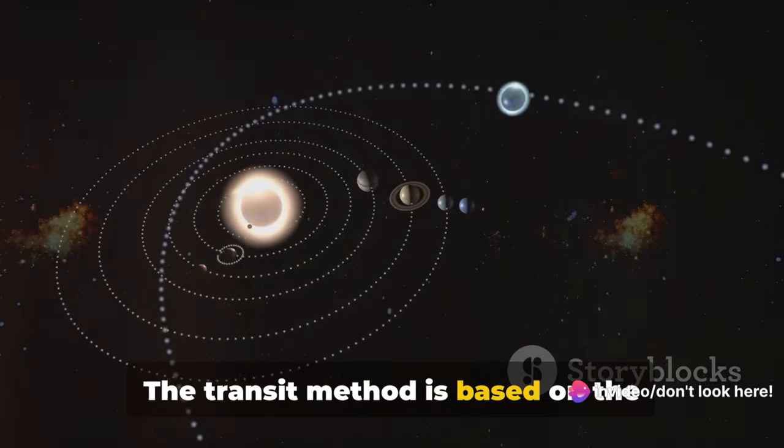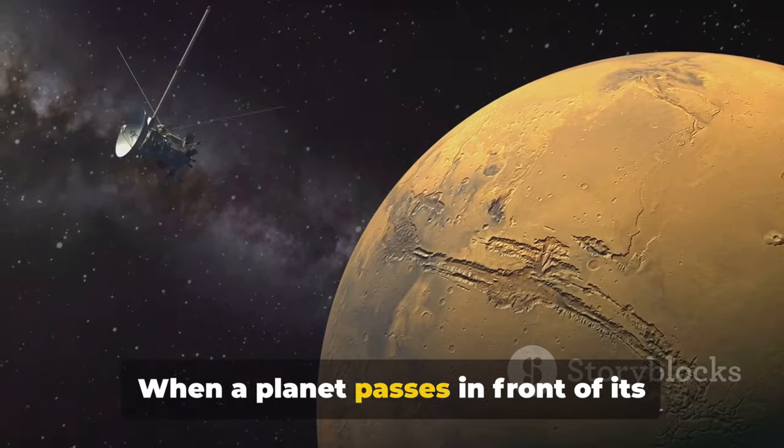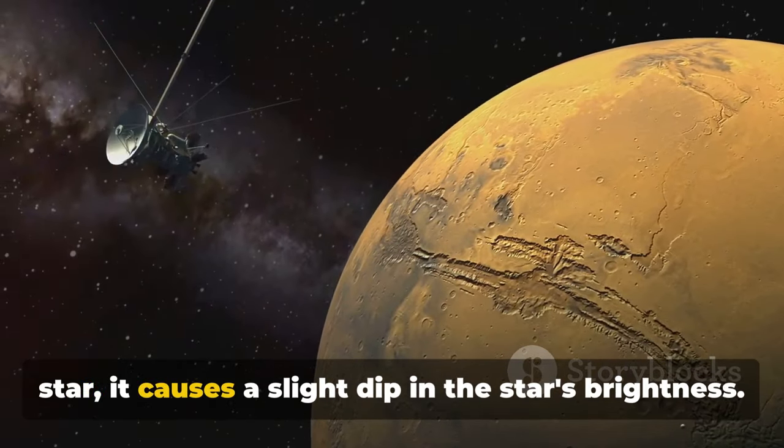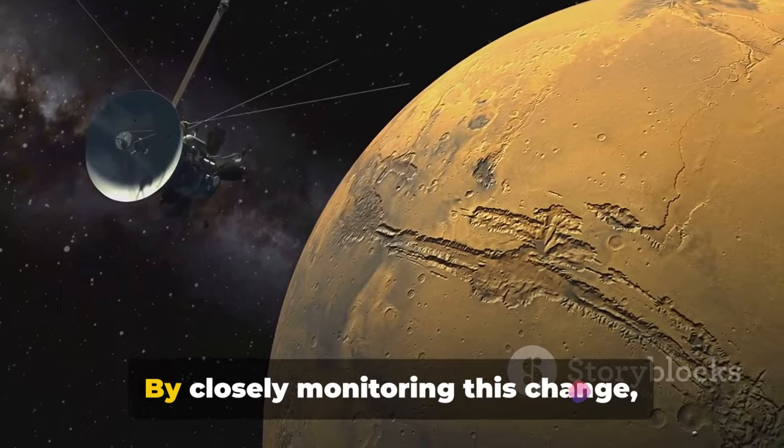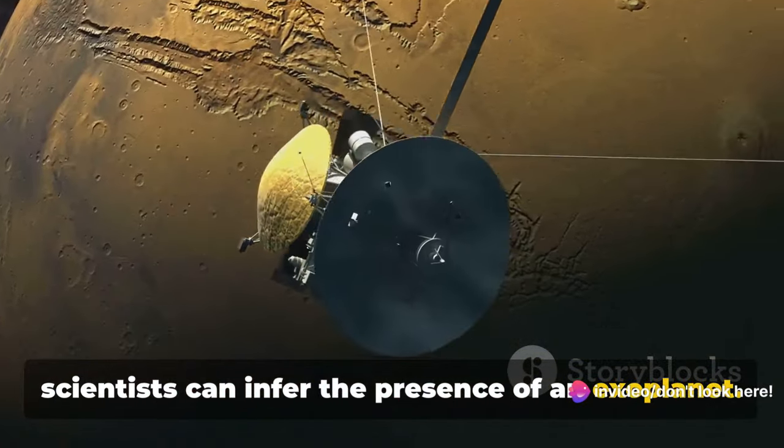The transit method is based on the observation of a star's brightness. When a planet passes in front of its star, it causes a slight dip in the star's brightness. By closely monitoring this change, scientists can infer the presence of an exoplanet.